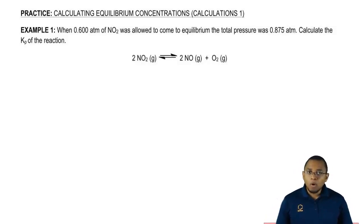We're going to say when 0.600 atmospheres of NO2 was allowed to come to equilibrium, the total pressure was 0.875 atmospheres. Calculate the Kp of the reaction. All I'm giving you is 0.600 atmospheres of NO2. I'm saying I'm allowing it to come to equilibrium. What that tells me is this amount is not my equilibrium amount. It's rather my initial amount. This is my initial pressure.